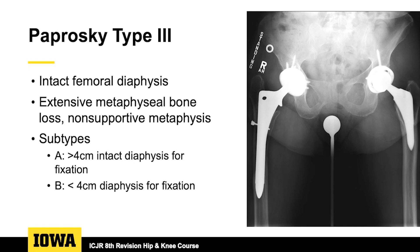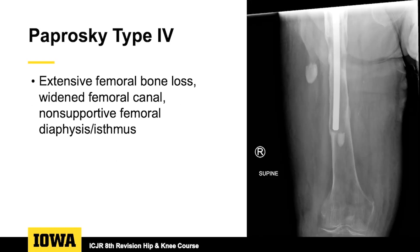With a fully coated stem you start to have stress shielding proximally, and your diaphysis — once you get the stem out — may have only three or four centimeters left with which to get a revision stem to engage. Then Paprosky type 4 femoral bone loss: this is the extensive loss throughout the bone with a widened femoral canal.